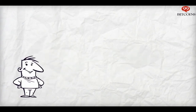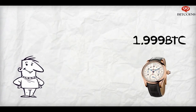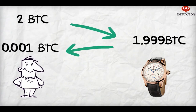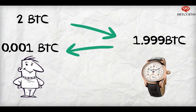Here's a short example. Let's say you want to buy a watch for 1.999 Bitcoin. You use an input of 2 Bitcoins and receive back an input of 0.001 Bitcoins as change. Since the change is such a small amount, you'll be required to pay an additional miners fee for it as well.